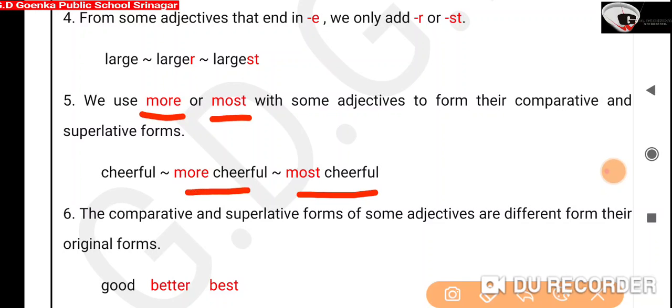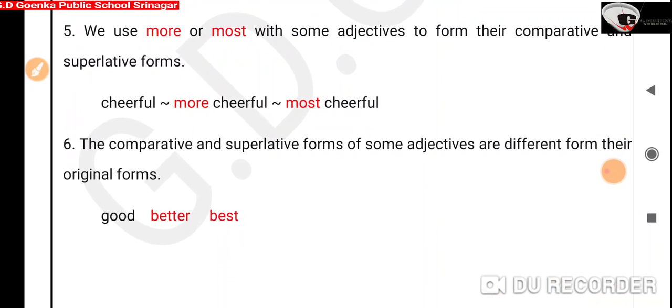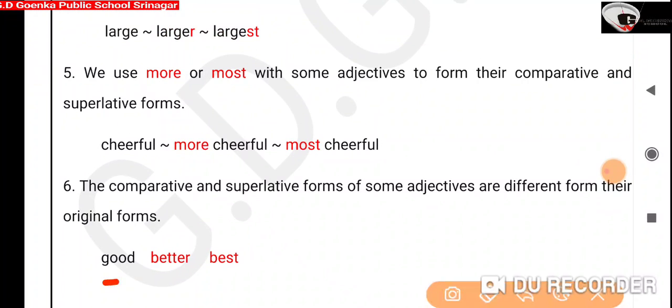And the last rule we follow is that some adjectives have different forms from their original forms for comparative and superlative. For example, good. Good is in positive degree and its comparative degree is better and its superlative degree is best.